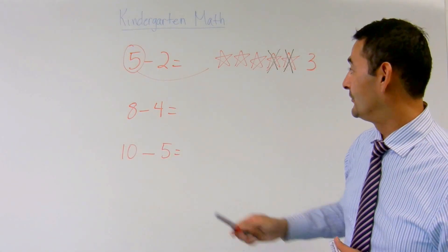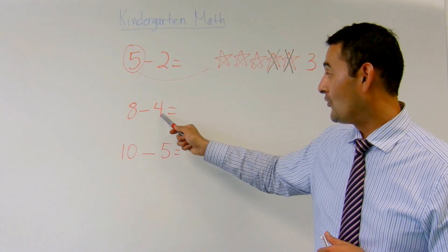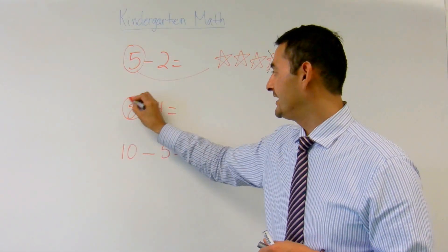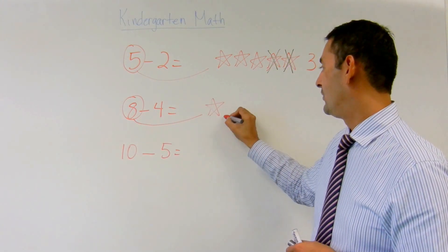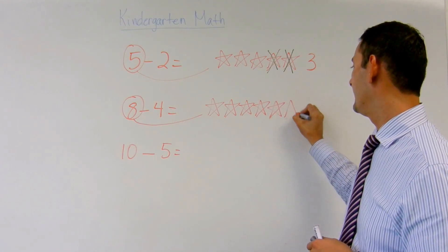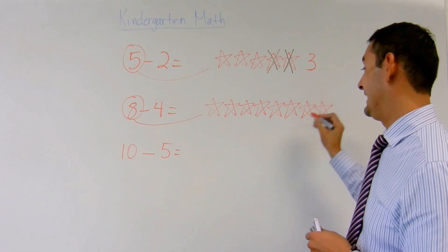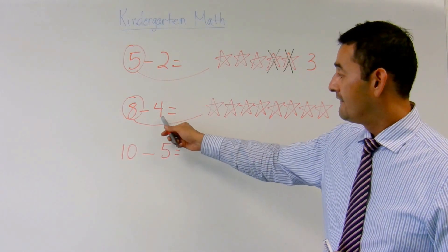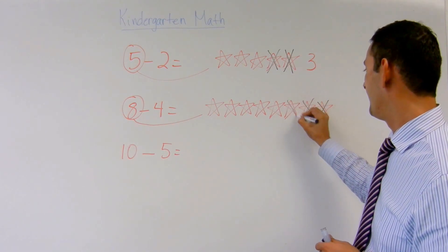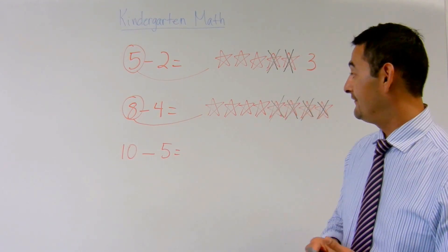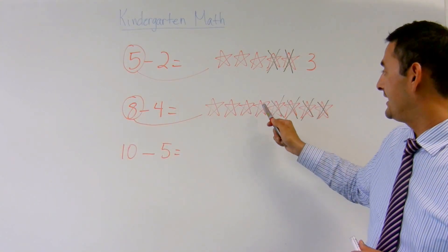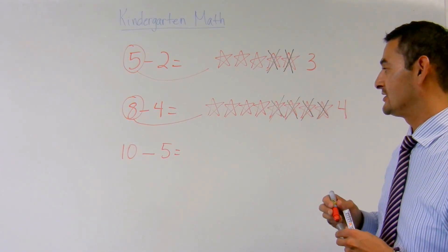Now let's take a look at the next example. Here I have eight minus four, or eight take away four equals. I'm going to move the bigger number here and draw eight stars: one, two, three, four, five, six, seven, eight. Now I'm going to take away four — one, two, three, four. How many do I have? Eight take away four equals one, two, three, four. Four — that is absolutely correct, boys and girls.